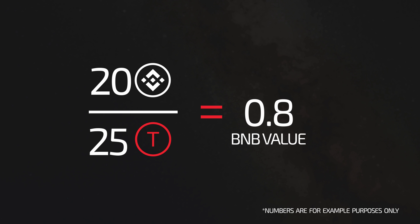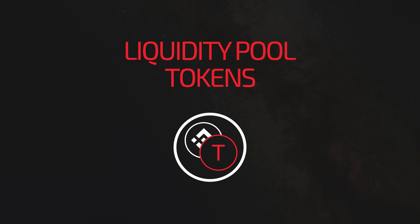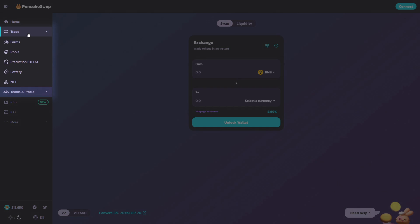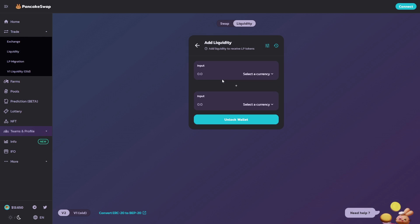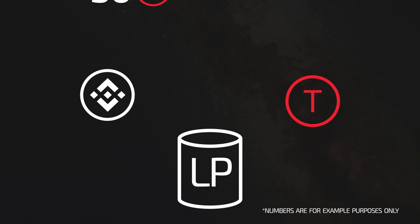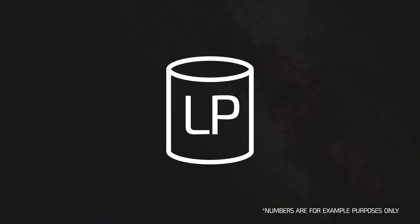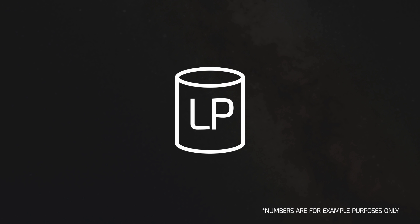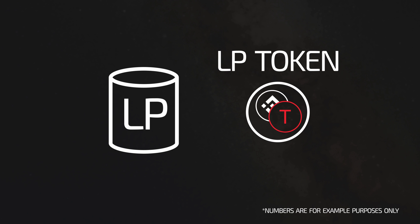When you take some tokens out, that token's value increases because there are fewer of them, and vice versa. LP tokens — when you go to the PancakeSwap interface, the next tab over is Liquidity, and you can add liquidity. What you're adding is an equal dollar value of the two tokens in the liquidity pool. By doing that you're not actually changing the price of the token at all — you're just strengthening its resistance to fluctuation.